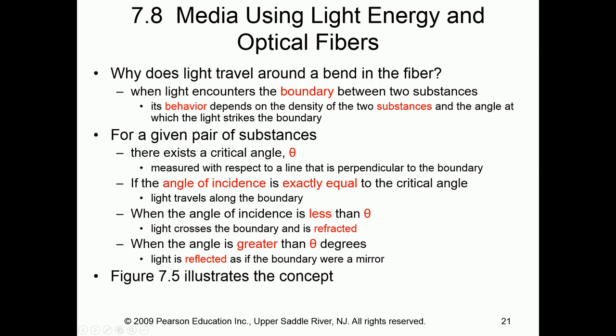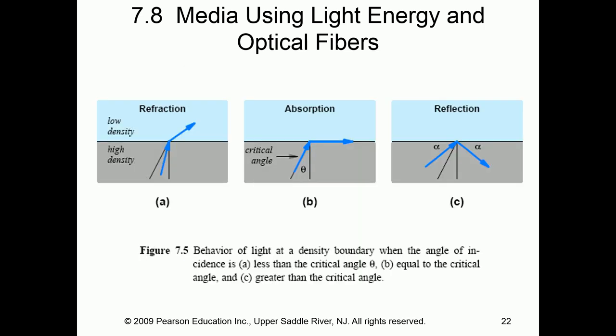The next question is, can light travel around a bend in the fiber? We're looking for a critical angle. If light hits one of the sides of the fiber at the wrong angle, we have a problem. Light can actually reflect — as in section C — and bounce down the cable correctly. Or the critical angle could be wrong and the light gets absorbed into the side, as in section B. Lastly, refraction — the critical angle is not correct, leading to the light being refracted and not going all the way down the cable.